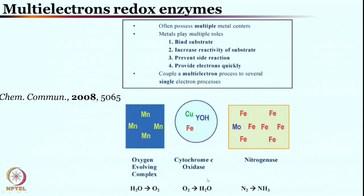The diagonally opposite cytochrome C oxidase confirms transformation of oxygen to water. Another very important enzyme is nitrogenase, which can convert nitrogen to ammonia. These are fascinating enzymes, fascinating transformations — we will come back to that in a moment.